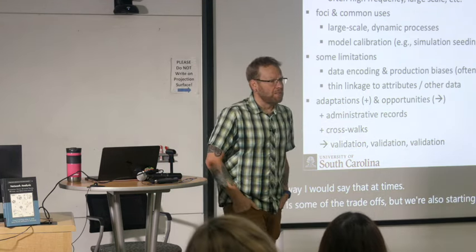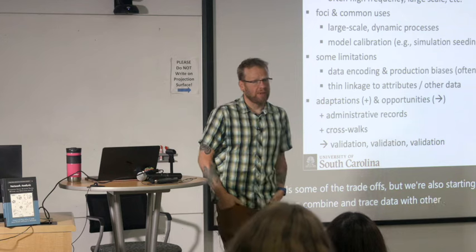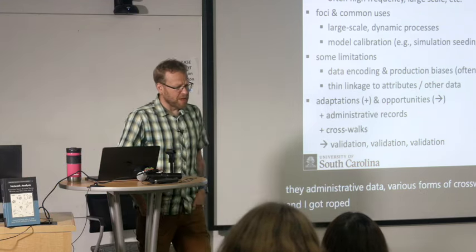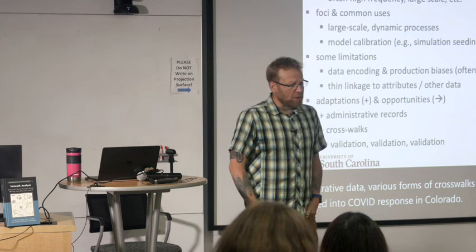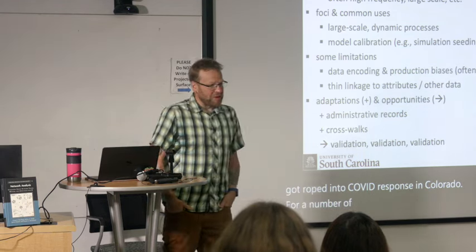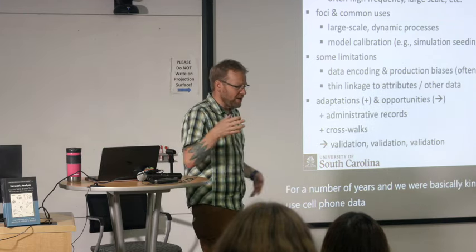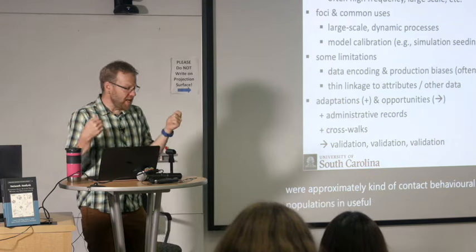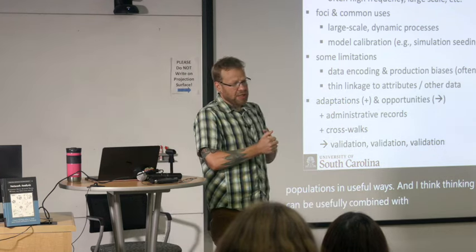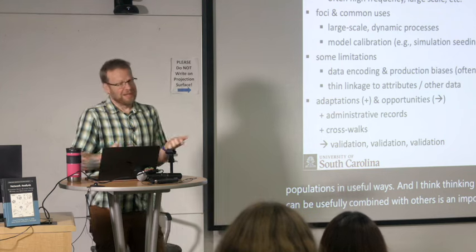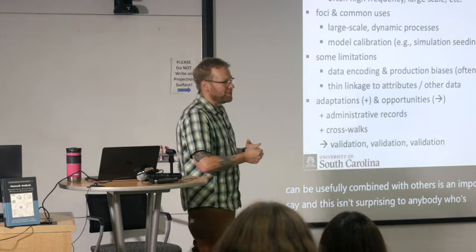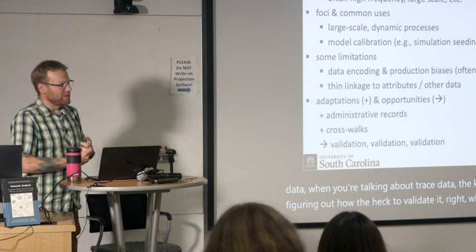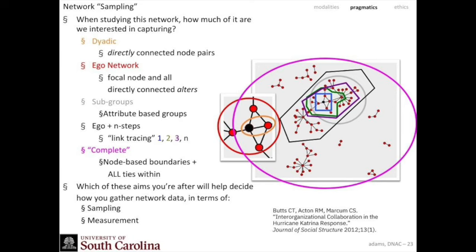We're starting to recognize ways to combine trace data with other sorts of data in useful ways — administrative data and various forms of crossroads. I got roped into COVID response in Colorado for a number of years, basically figuring out ways to use cell phone data and other types of administrative data to approximate contact behavioral patterns in populations. Thinking about how these things can be usefully combined with others is an important opportunity. And when you're talking about trace data, the key opportunity is figuring out how to validate it — what does it actually represent is a question we have to keep asking.